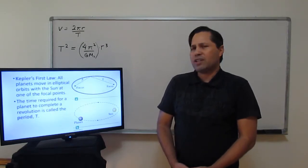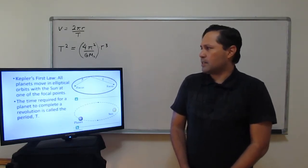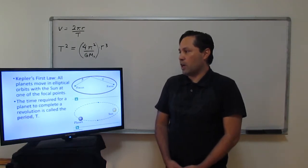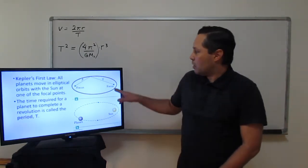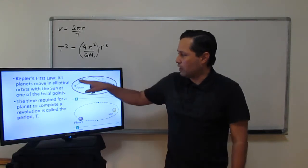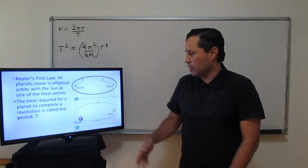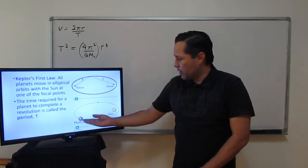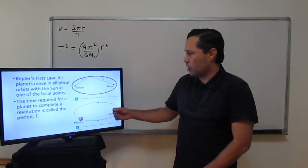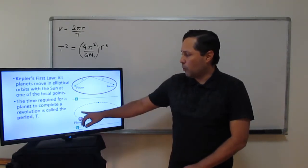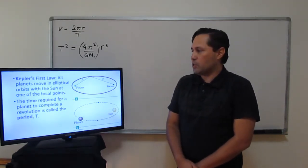Kepler's first law states that planets move in elliptical orbits with the sun at one of the focal points. One focal point is where you find the sun; the other is an imaginary point in space.